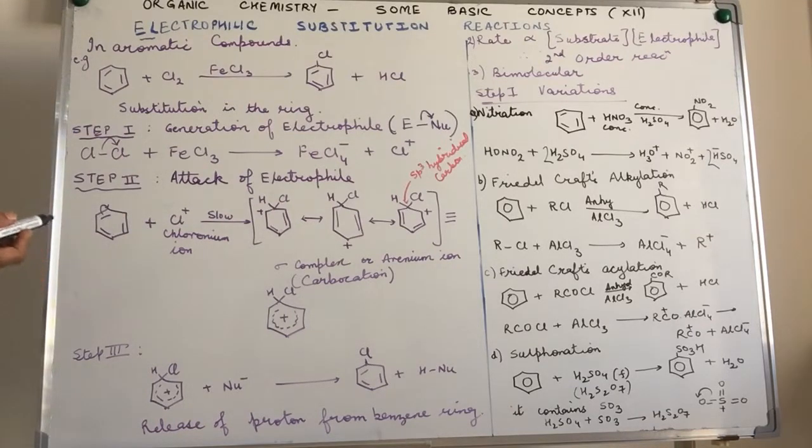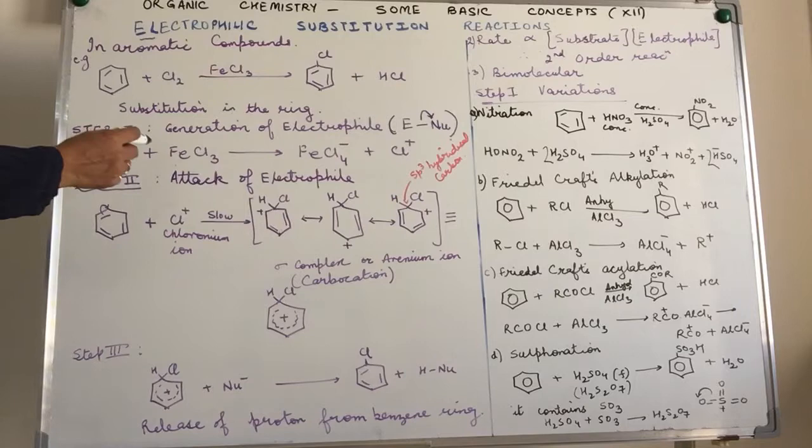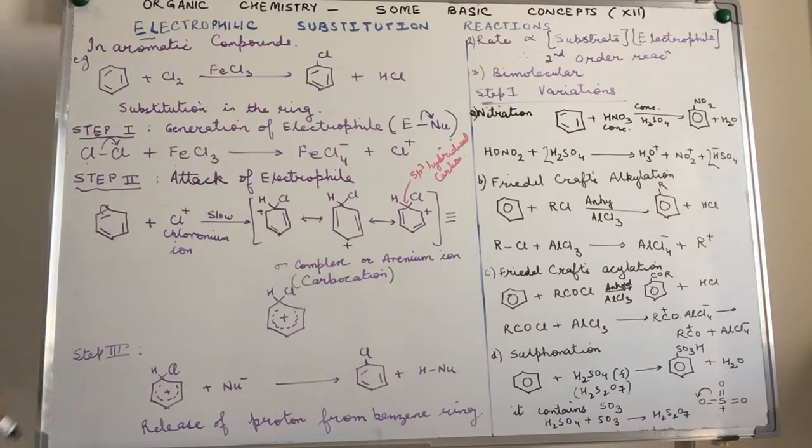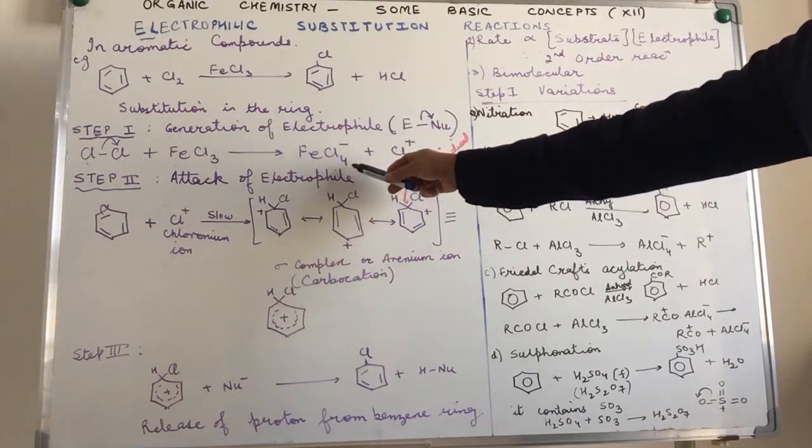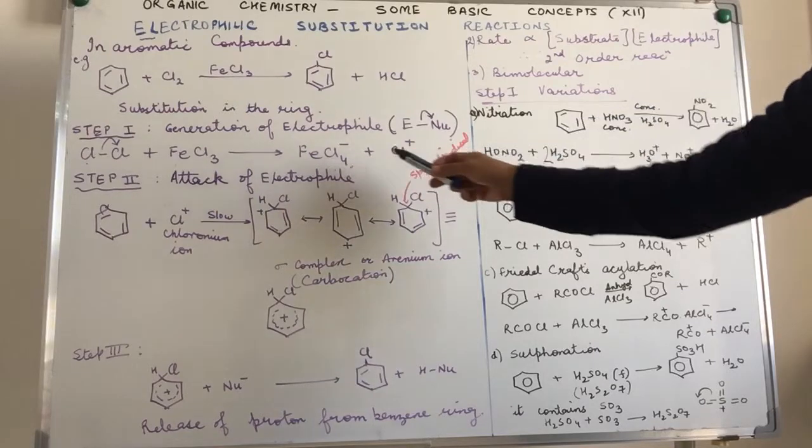Chlorine ClCl in the presence of FeCl3. Now this FeCl3 actually needs electrons because of the vacant orbitals in it. So what happens is chlorine breaks down—heterolytic fission happens over here.